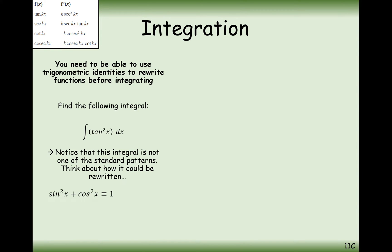We have sin squared plus cos squared equals 1. How does this relate to tan? Well, if we take this identity and divide everything by cos squared, then we get the identity tan squared plus 1 equals sec squared. We can rearrange this to tan squared equals sec squared minus 1. And sec squared is a lot easier to integrate than tan squared because sec squared is the result of a formula booklet differentiation.